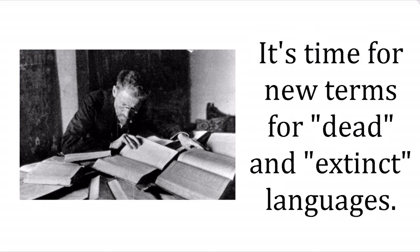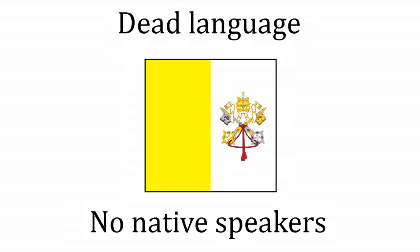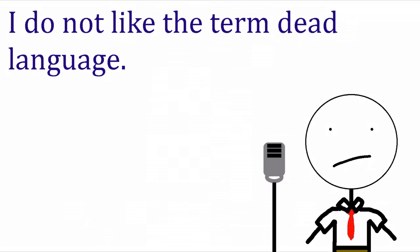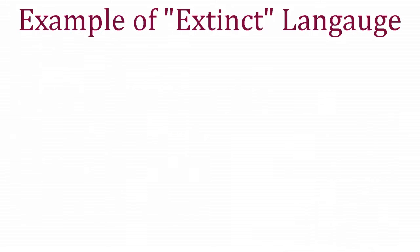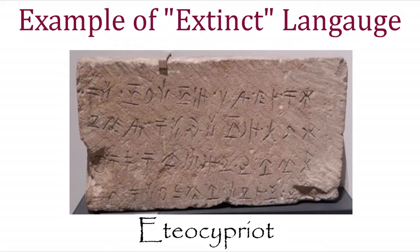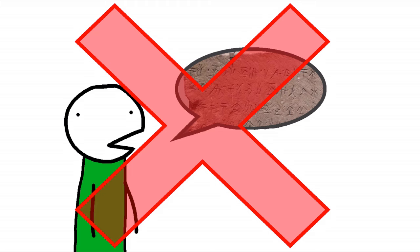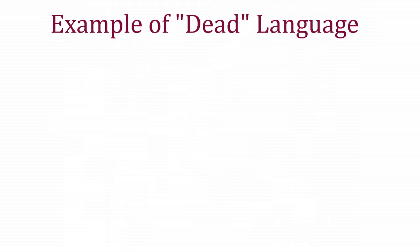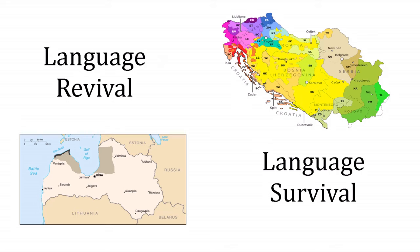Traditionally, extinct languages are considered to be those with no native or L2 speakers left, and dead languages are those with just no native speakers. I don't like the term 'dead language' or how it's used alongside 'extinct language.' Under the traditional definition, an extinct language is something like Eteocypriot — nobody speaks it anymore. A dead language is something like Latin, which has L2 speakers.